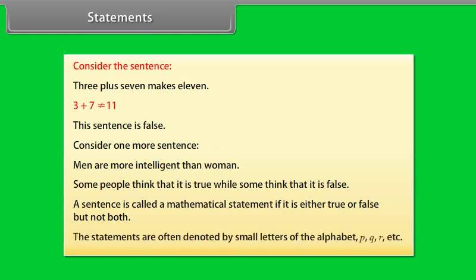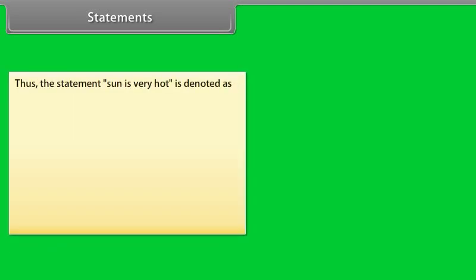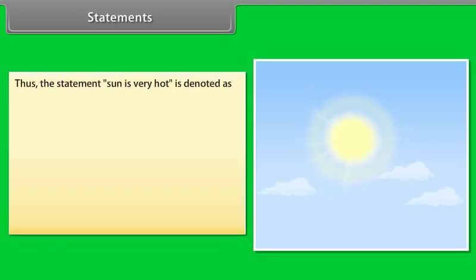Statements are often denoted by small letters of the alphabet: P, Q, R, etc. Thus, the statement 'Sun is very hot' is denoted as P: Sun is very hot.